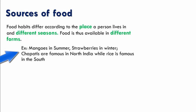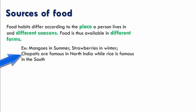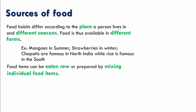For example, mangoes are available in summer and strawberries are available in winter. Now with respect to place, chapatis are famous in North India while rice is famous in the South. Food items can be eaten raw or prepared by mixing individual food items.